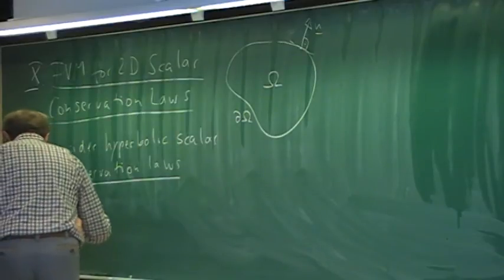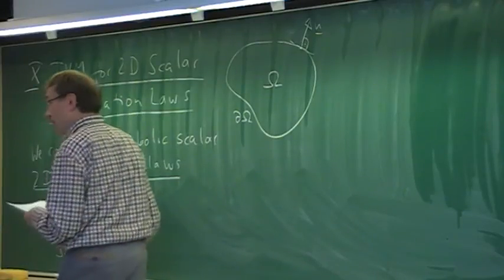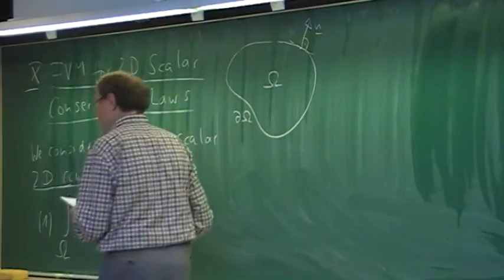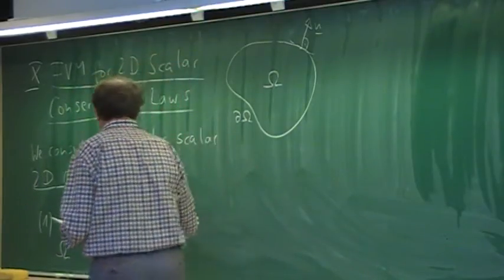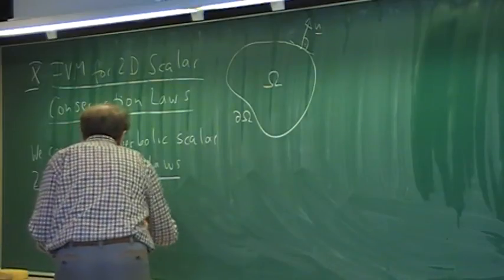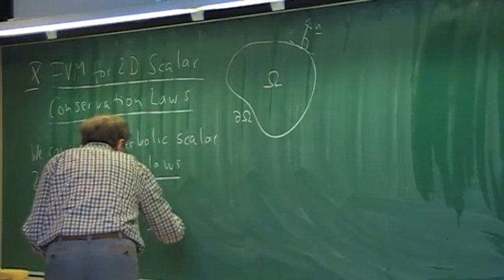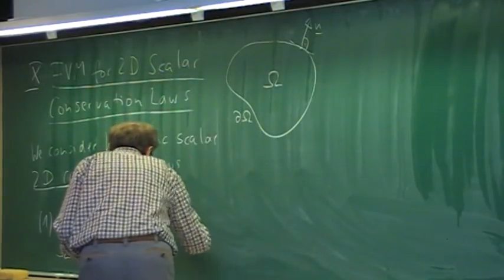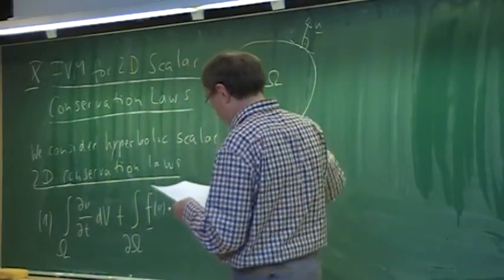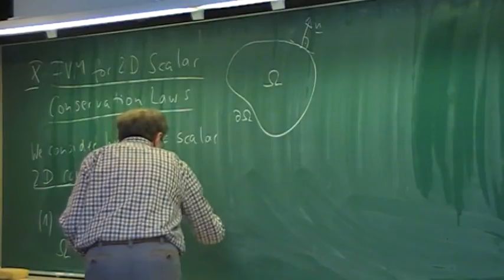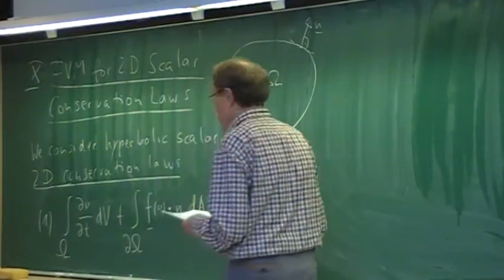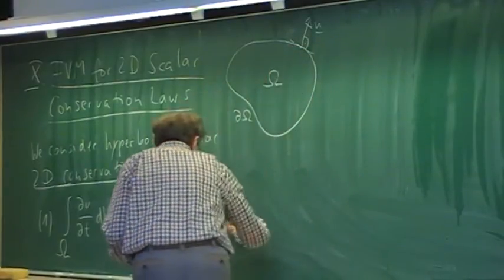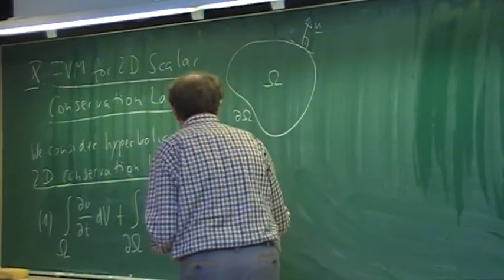For a hyperbolic problem, we have fluxes that depend on the unknown itself. We have an integral over the control volume omega, where the conserved variable is u — the scalar. Then we have the fluxes over the boundary of the domain, which becomes a surface integral, where the flux vector f(u) is taken in the inner product with the outer unit normal vector n, integrated over the area. We may also have a source term.